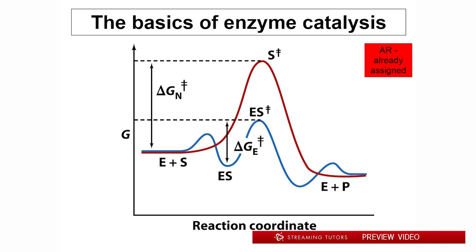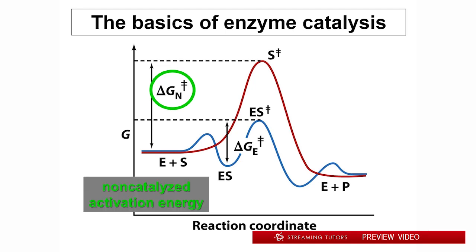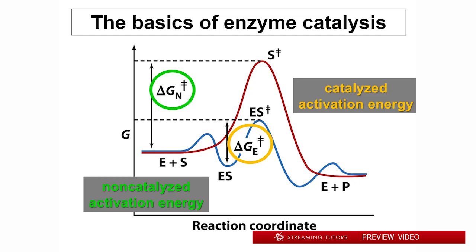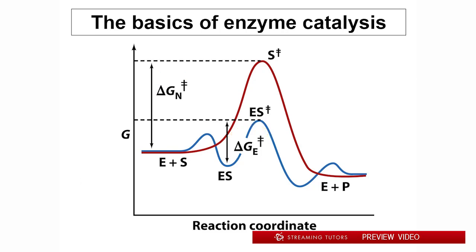The enzyme-substrate complex has an inherent free energy of activation — the inherent activation energy of the reaction in the uncatalyzed form, symbolized here as delta G double-dagger sub N. And then the much lower free energy of the catalyzed reaction, that free energy being lowered by the physical influence of the enzyme on the substrate, influencing the forward progress of the reaction.